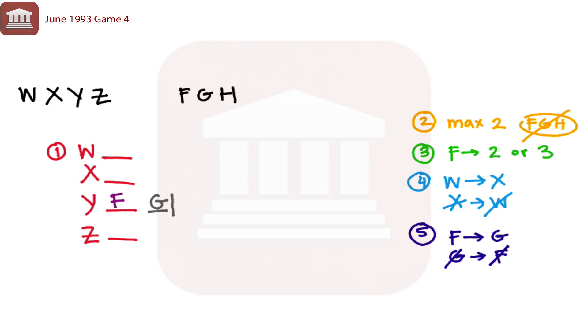So there's only one to two more that F can respond to, so it can't respond to the rest of the three. And so that means that W, X, and Z are going to be between F, G, and H.